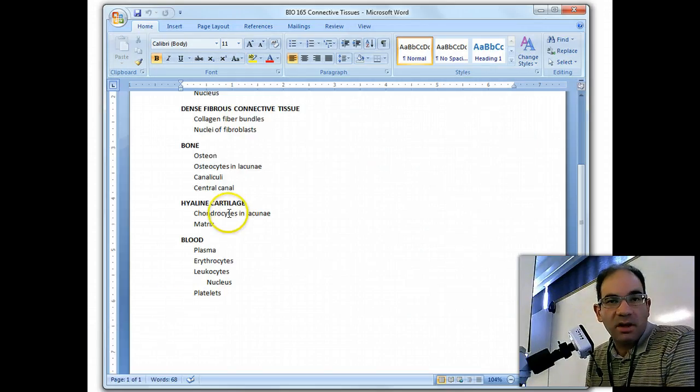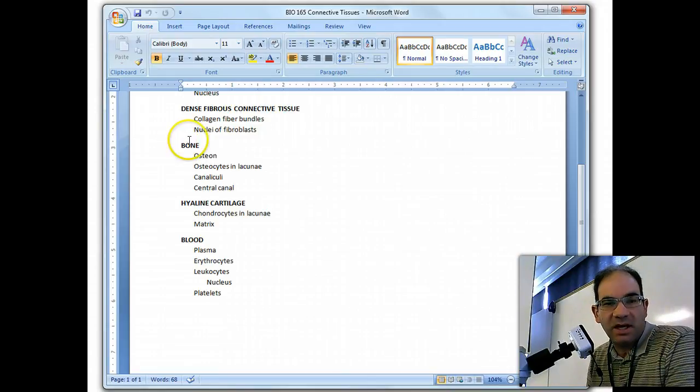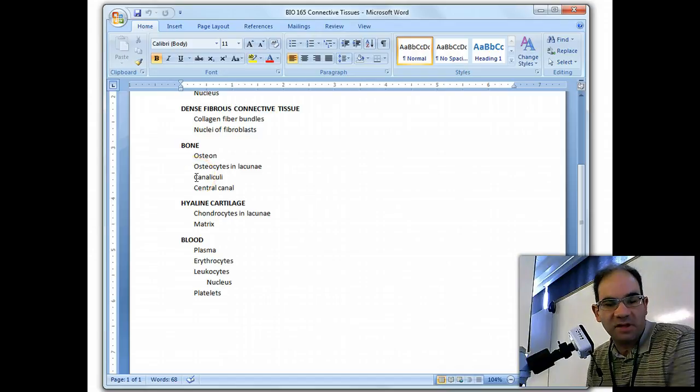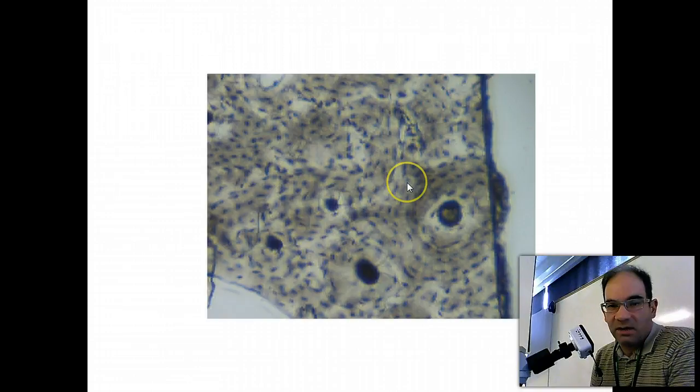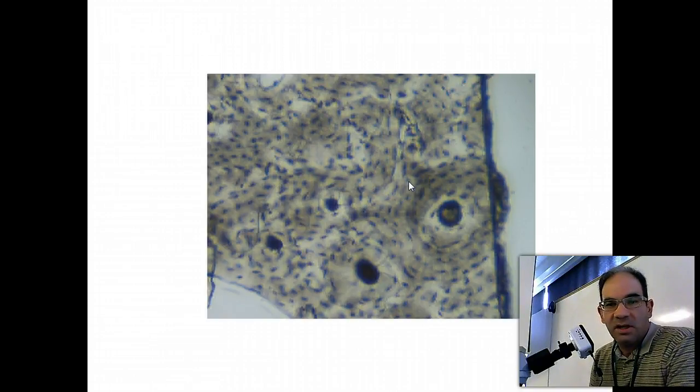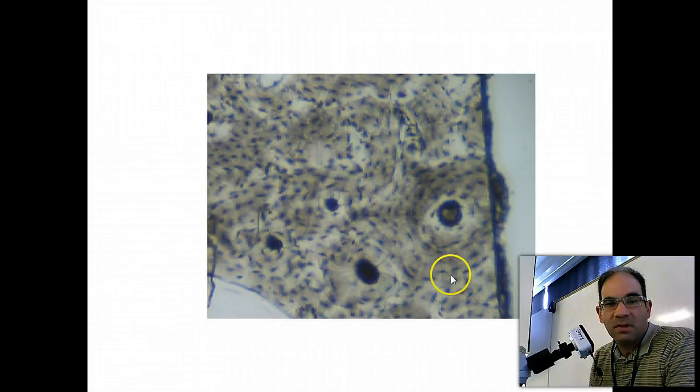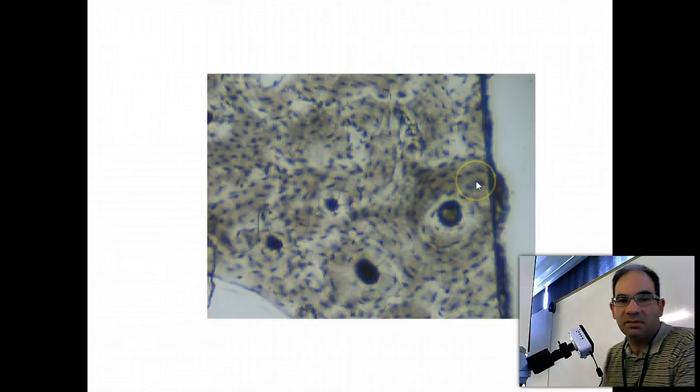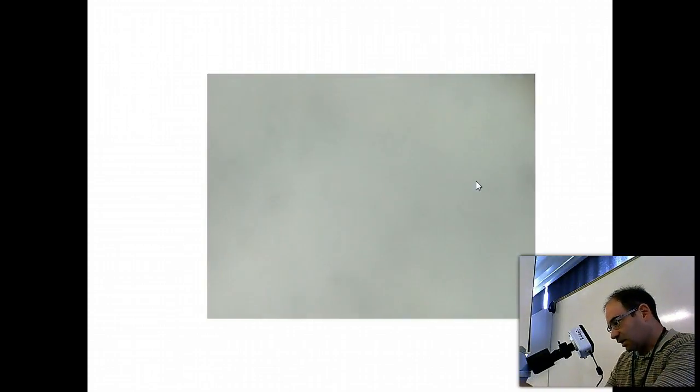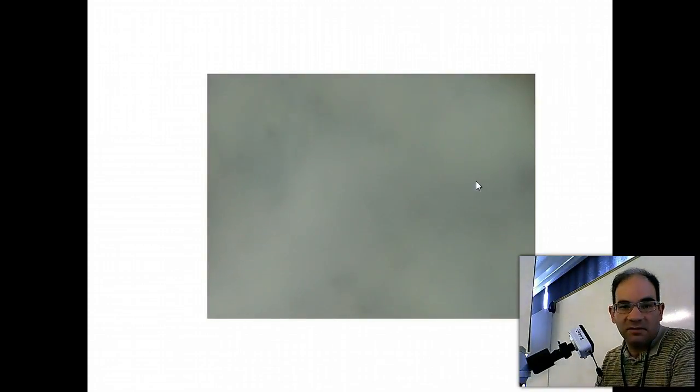Our next tissue type is bone supportive connective tissue, and you're responsible for osteon, osteocytes in lacuna, canaliculi, and central canal. So here I am at 100x, and what I want to show you here is that we have these overall functional units. These are the osteons, and so you can see an osteon right here, you can see an osteon right here, and you can see an osteon right here. And you have to be zoomed out to be able to see these pretty well. So now let's take a look at some of the structures in an individual osteon.